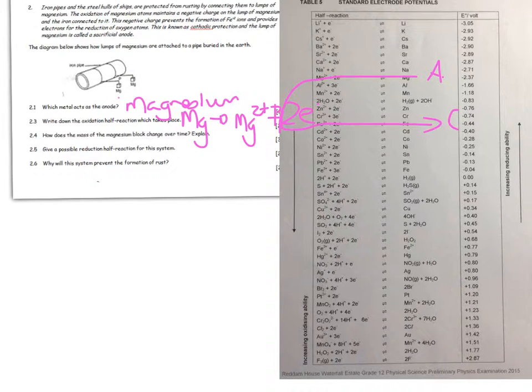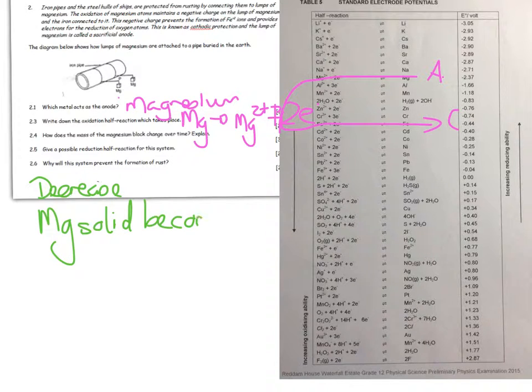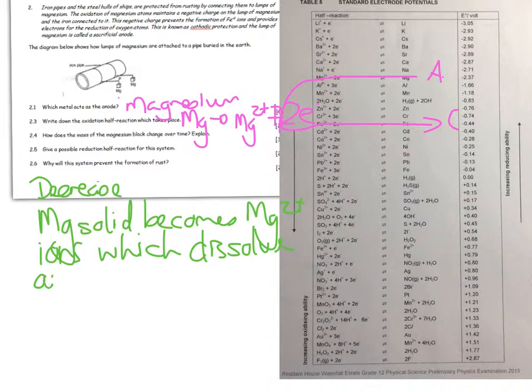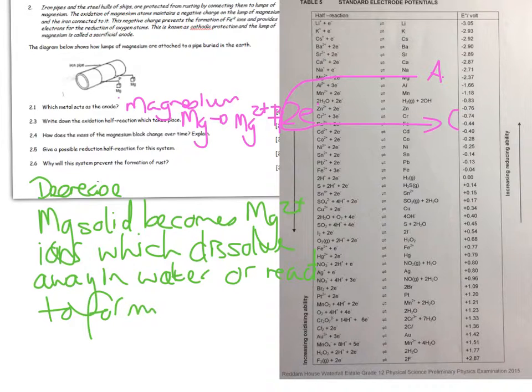How does the mass of the magnesium block change over time? It decreases. For the explanation, the magnesium solid becomes magnesium 2 plus ions which dissolve away in surrounding water or react to form magnesium oxide, because that's what it was protecting against—iron oxide formation.